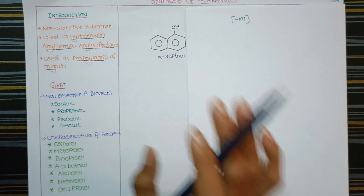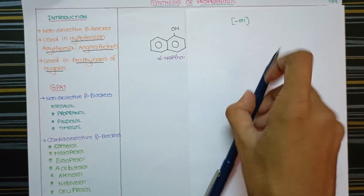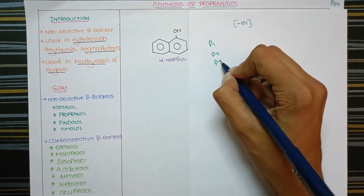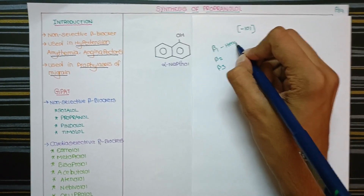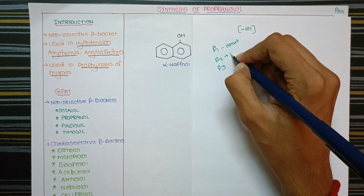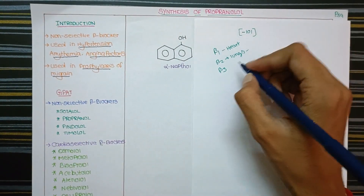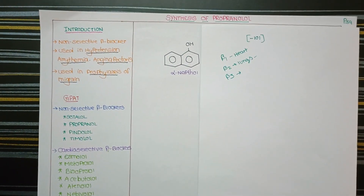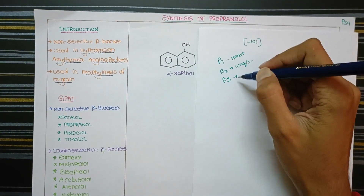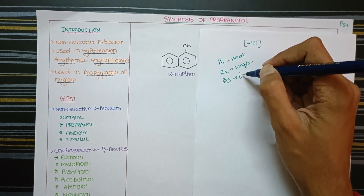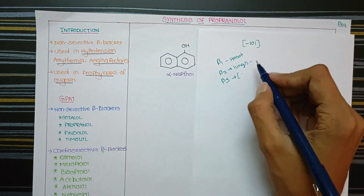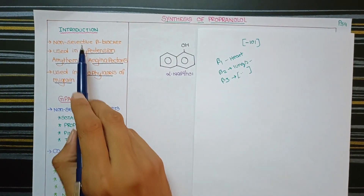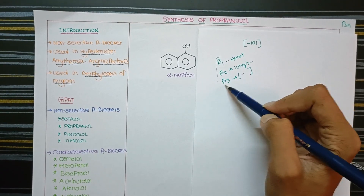Beta receptors are of three types: beta-1, beta-2, and beta-3. Beta-1 receptors are located in the heart. Beta-2 receptors are located in the lungs and bronchi smooth muscle. Beta-3 receptors are located in the adipocytes — adipocytes are the fat-storing cells in the body.